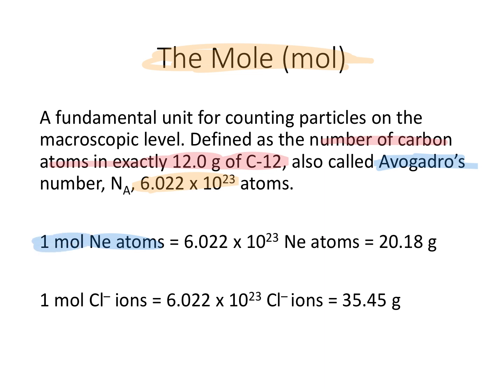So if you had a mole of neon atoms, that would be 6.022 times 10 to the 23rd neon atoms, which, if you look on the periodic table, is 20.18 grams. So 20.18 grams of neon atoms contains 6.022 times 10 to the 23rd neon atoms. It would also work for ions — if we had a mole of chlorine ions, that would be 6.022 times 10 to the 23rd chlorine ions, which is 35.45 grams.